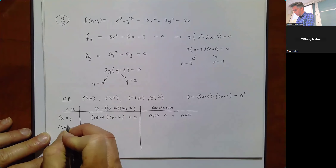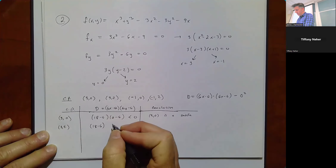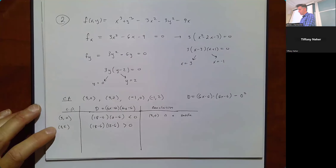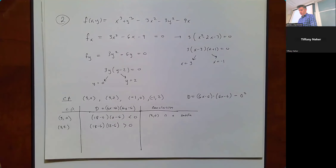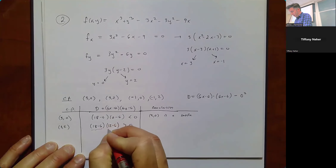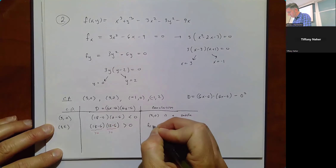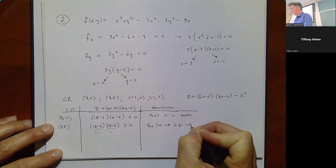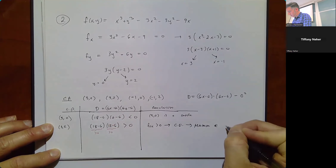At (3, 2): D = (18 - 6)(12 - 6) = (12)(6), which is positive. Since D is positive, we check fxx = 6(3) - 6 = 12, which is positive — meaning concave up. So we have a minimum at (3, 2).